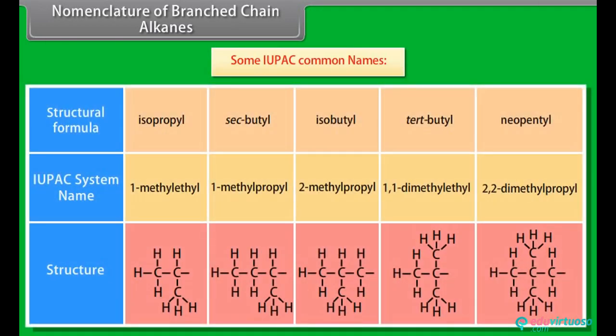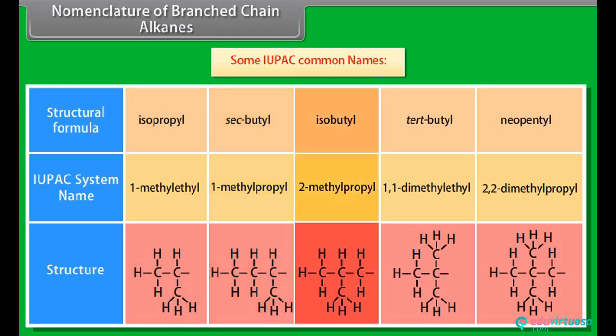Some IUPAC and common names: common name isopropyl, IUPAC name 1-methylethyl. Common name sec-butyl, IUPAC name 1-methylpropyl. Common name isobutyl, IUPAC name 2-methylpropyl. Common name neopentyl, IUPAC name 2,2-dimethylpropyl.